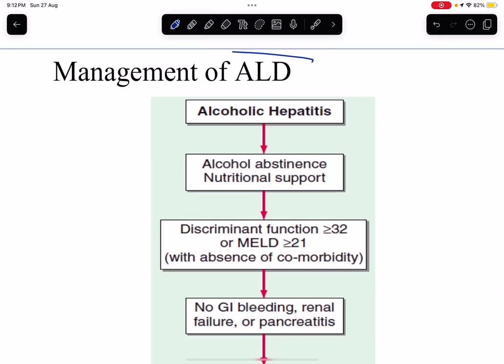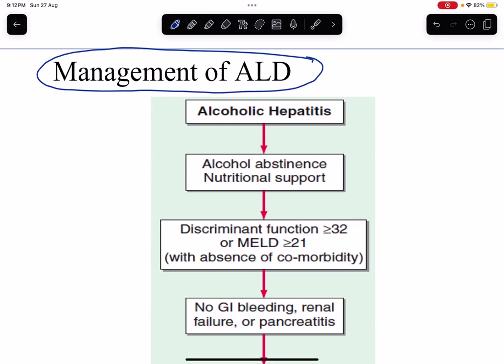Regarding management of alcoholic liver disease: for the fatty liver stage, no specific drugs are required. The most important intervention is alcohol abstinence. If the patient remains abstinent, the fatty liver changes will be reversed back to a normal liver.